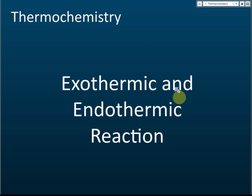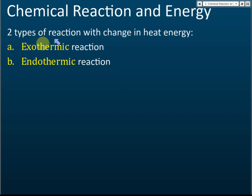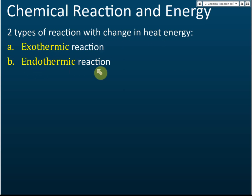This is thermal chemistry and we're going to discuss exothermic and endothermic reactions. There are two types of reactions with change in heat energy. We classify chemical reactions according to the change of energy: exothermic reactions and endothermic reactions. These are the two chemical reactions that involve change of heat energy.